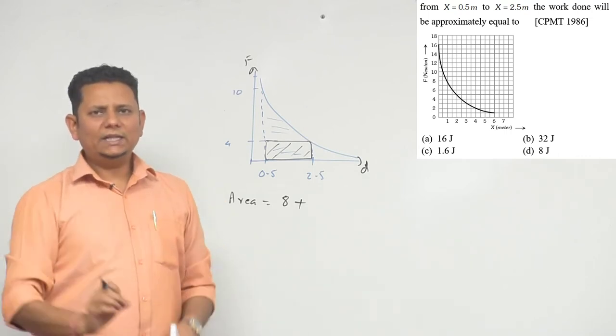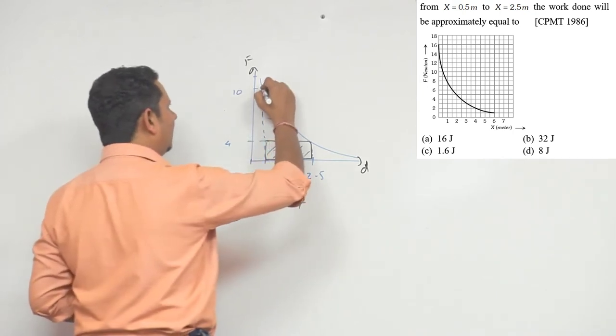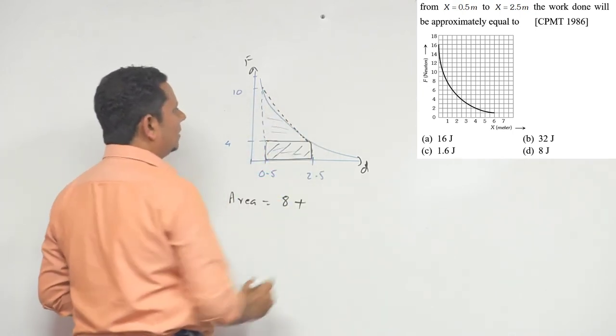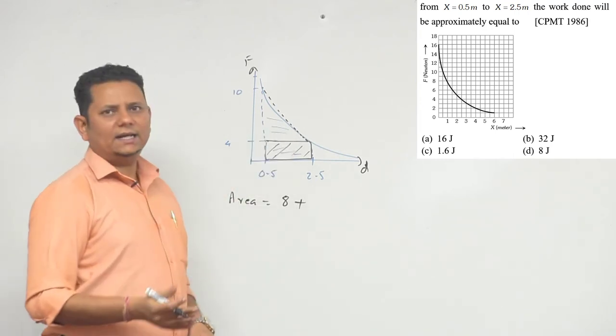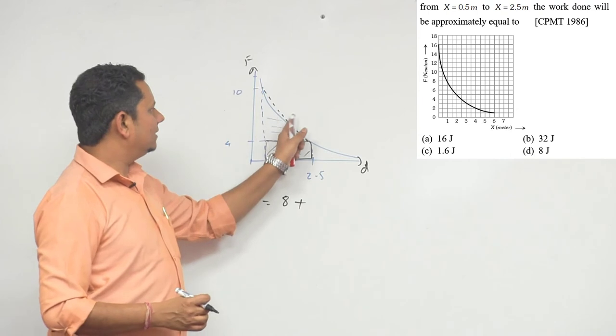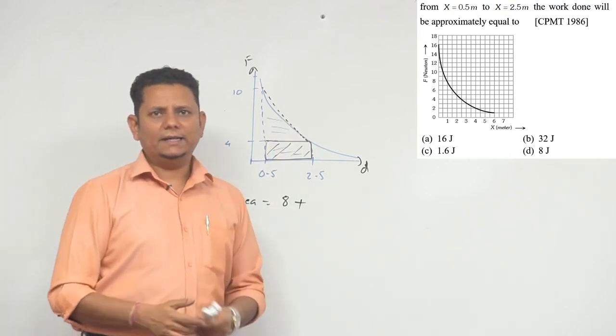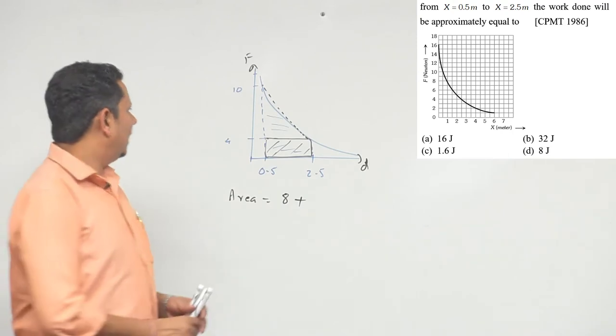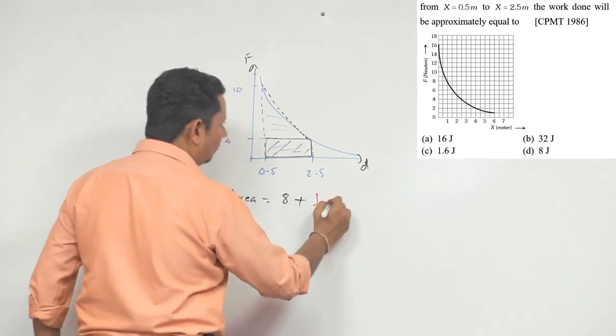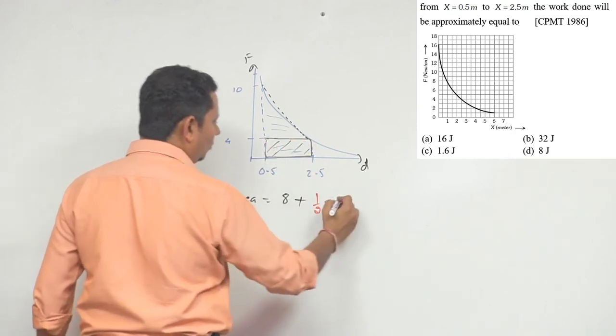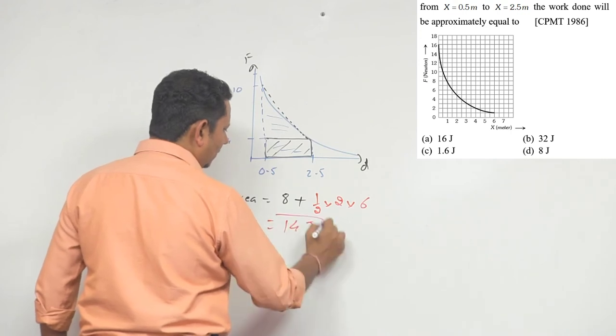This graph looks a little bit like a triangle to us. If we approximate it as a triangle and calculate the triangle area, it will be equal to half multiplied by 2 multiplied by 6, so that equals 14. This would be the trapezium area if it were perfect.